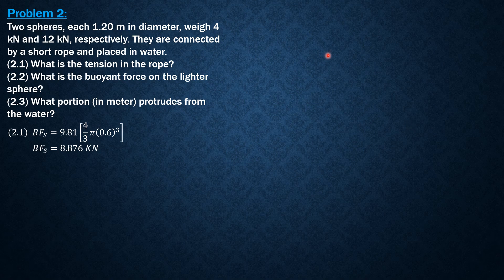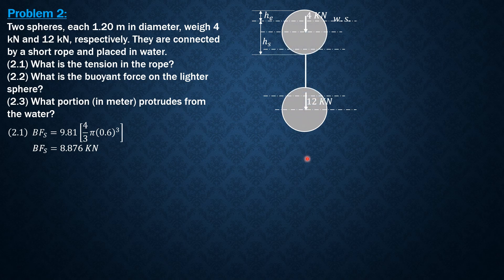So that gives us the idea that the figure should look like this figure here. To answer the first question, the tension in the rope, let's involve the buoyant forces. BF1 is equal to 8.876 because this heavier sphere is totally submerged.